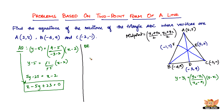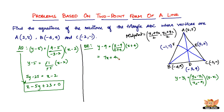For median BE, substituting the values, we get y − 9 = (2 − 9)/(0 + 4) × (x + 4). Solving this, we get 7x + 4y − 8 = 0. So this is the equation of median BE.